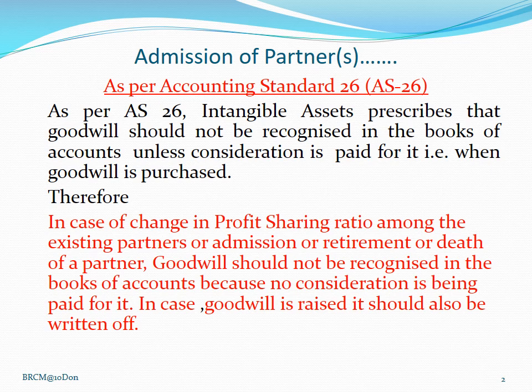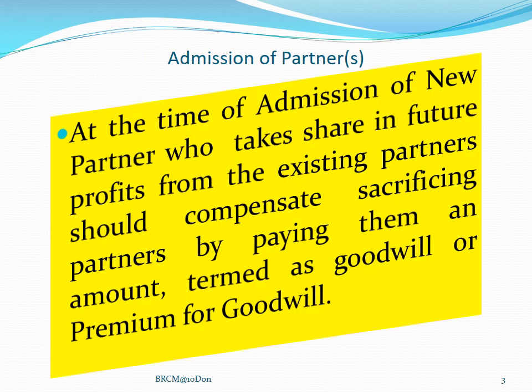In case goodwill is raised, it should also be written off immediately. Now at the time of admission of a new partner, the new partner who takes a share in future profit from the existing partners should compensate the sacrificing partner by paying them an amount termed as goodwill or premium for goodwill. That means, the new partner will pay to the sacrificing partner some amount to compensate their sacrifice, and that is known as goodwill or premium for goodwill.